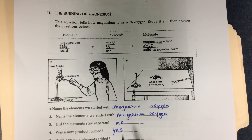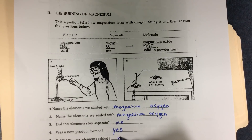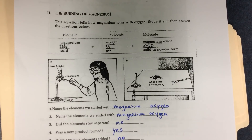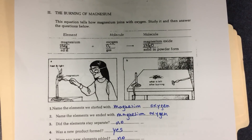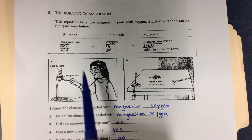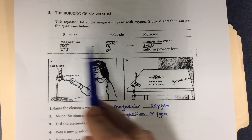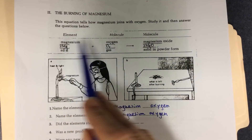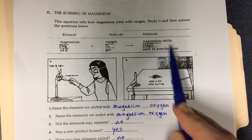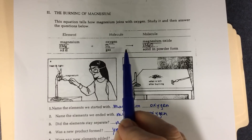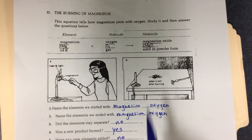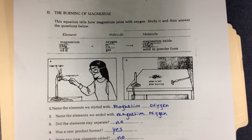Were any new elements added? No, it's only magnesium and oxygen. Lost? No. Burning of magnesium causes a chemical change. You can see that there are molecules on one side that are different from the molecules on the other. There is an arrow in the middle — it's a chemical change.